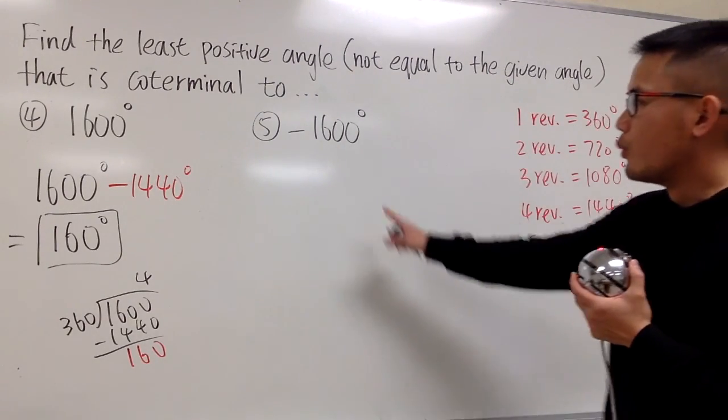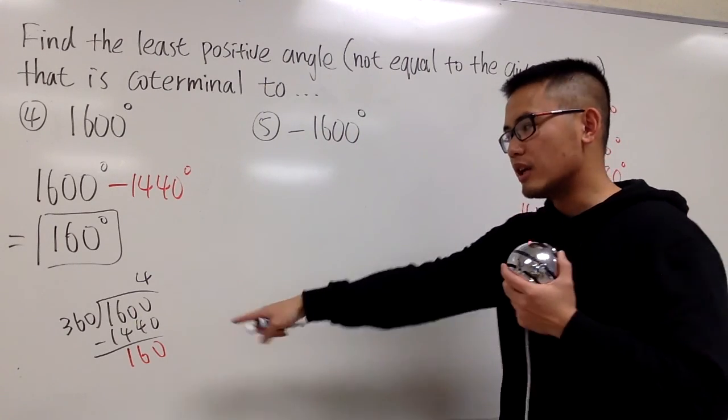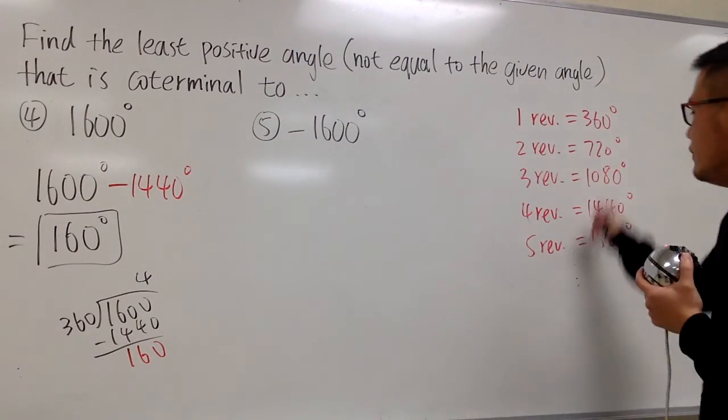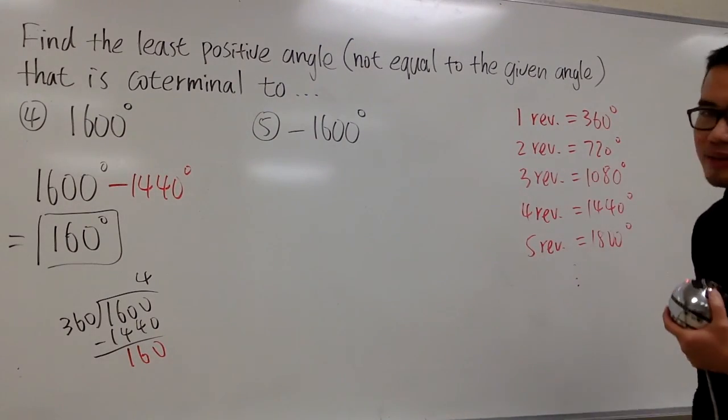All right, now, when you have negative angles like this, you cannot do long division. It's not that clear anymore. It will be better if you write this down and then just check this out.